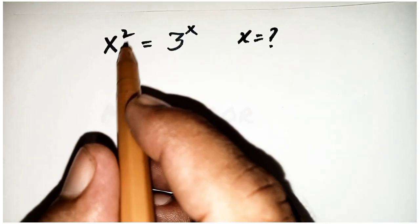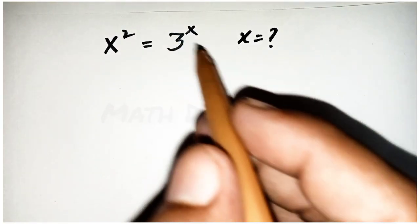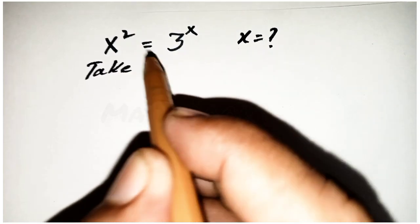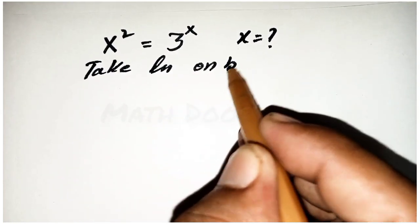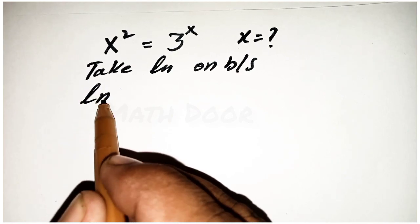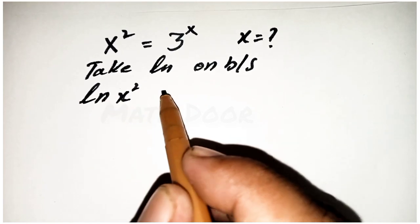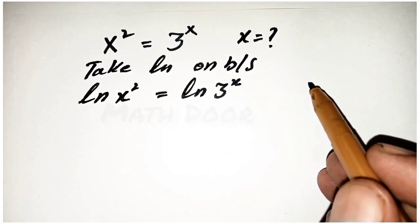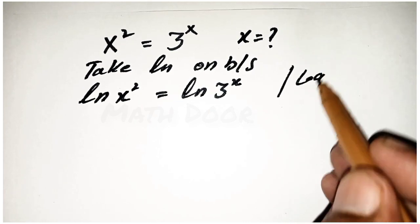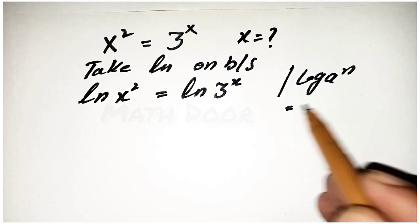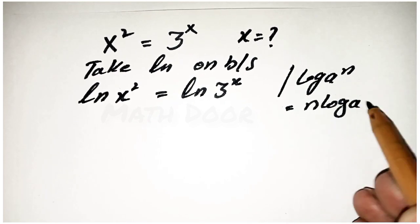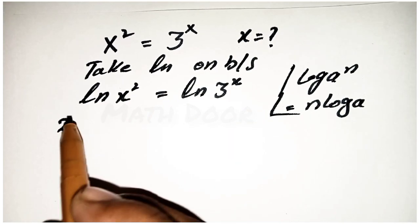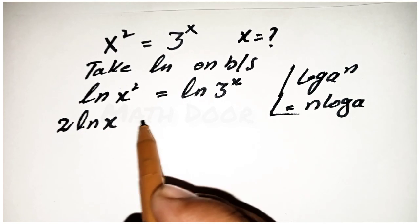Hello math lovers! Today our topic is x² = 3^x — find the value of x. First of all, take the natural log on both sides: natural log of x² is equal to natural log of 3^x. We have a logarithmic rule: log(a^n) = n·log(a).